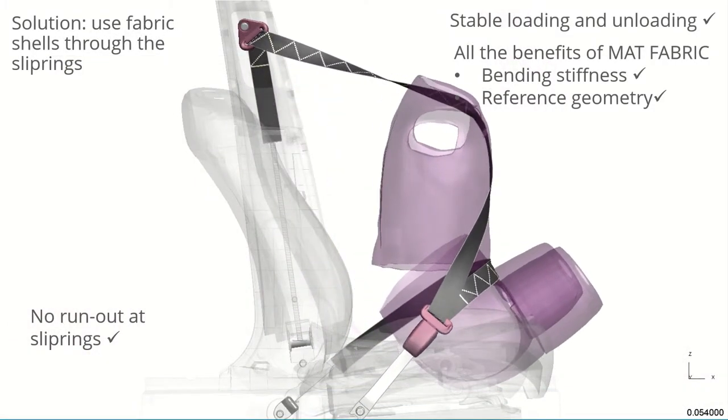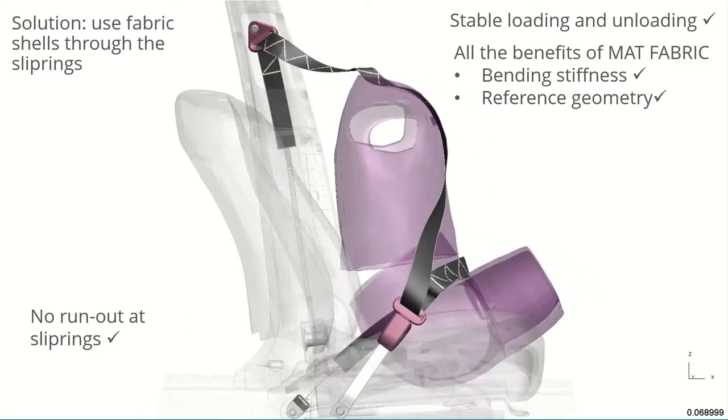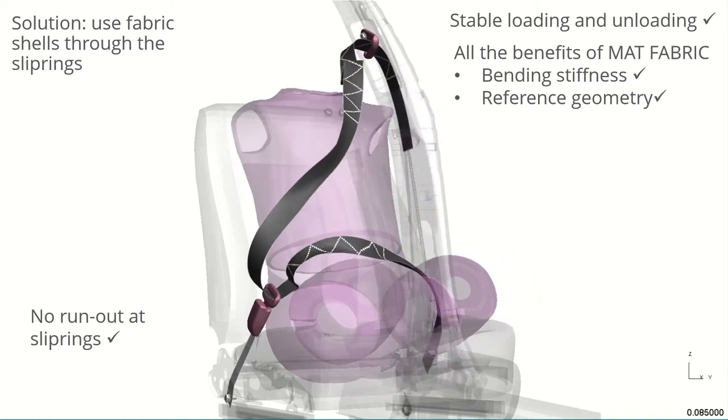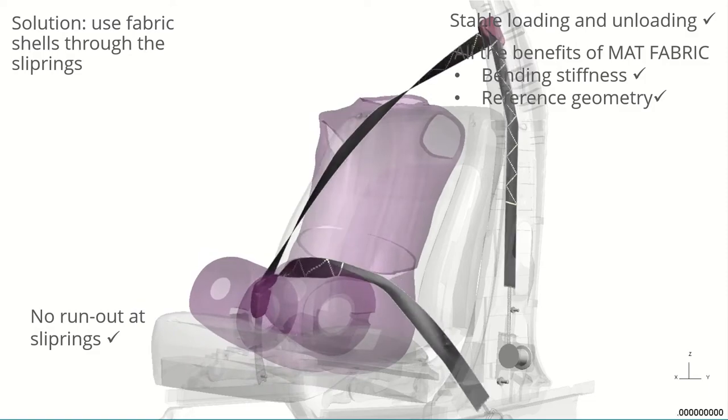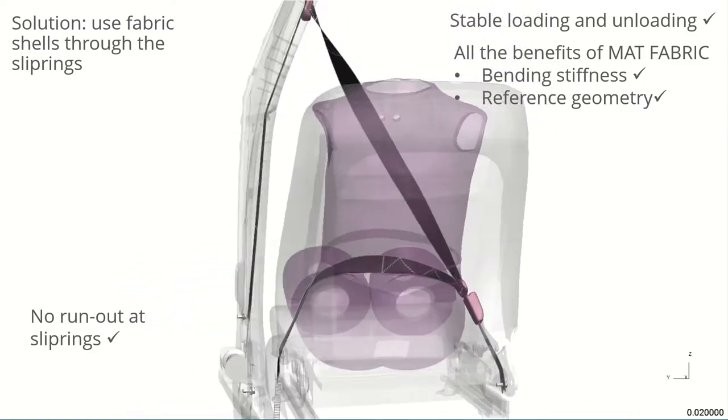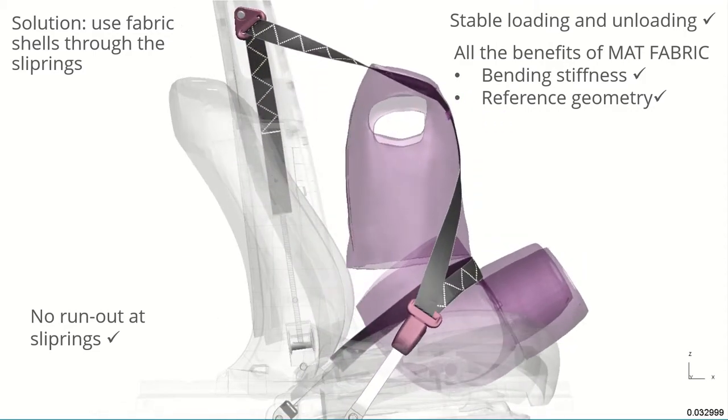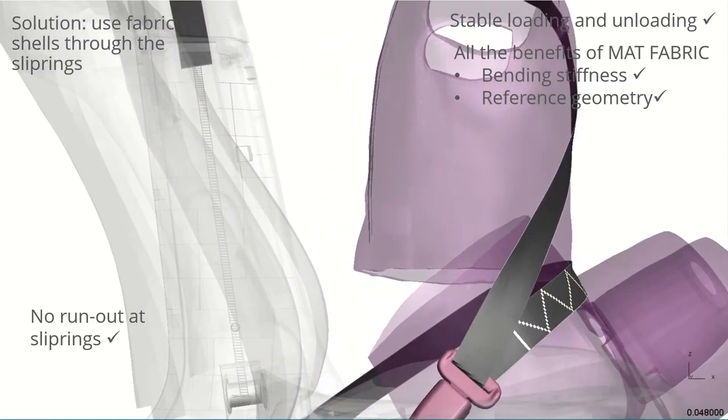Primer's new advanced belt fitting lets us use fabric shells over most of the seatbelt route, including through both of the slip rings. Matte fabric is robust, accurate, and stable when unloading. It has the benefits of bending stiffness, and we can use airbag reference geometry to remove any initially stretched elements. We'll take a look at these in more depth later.